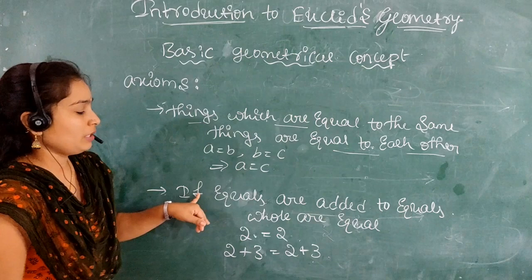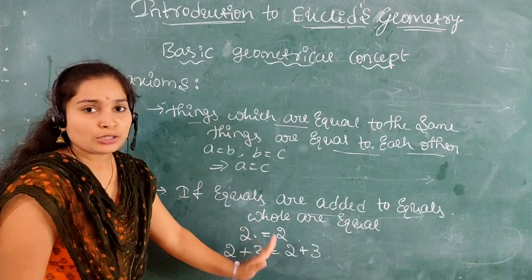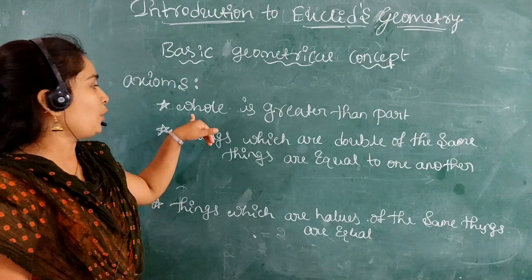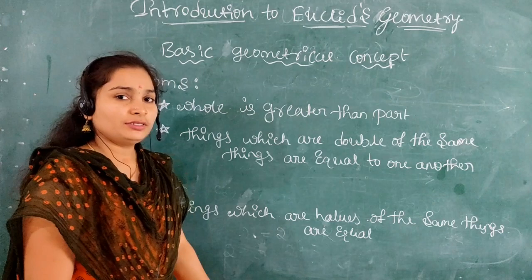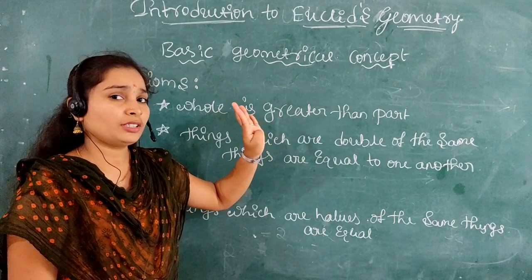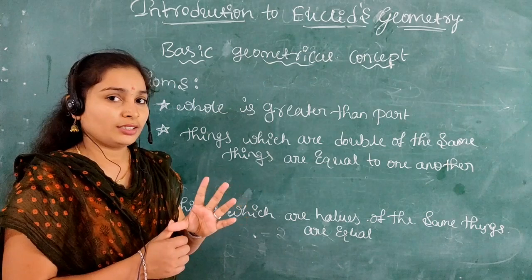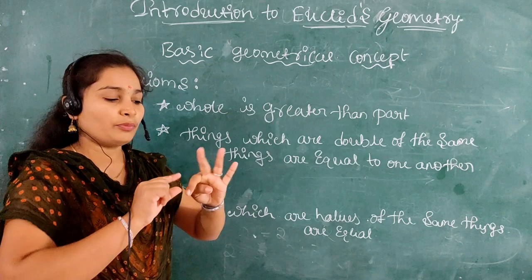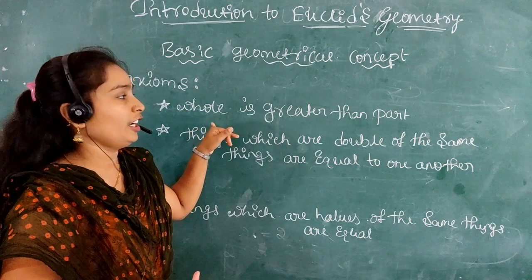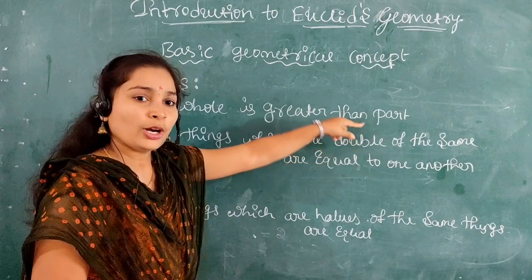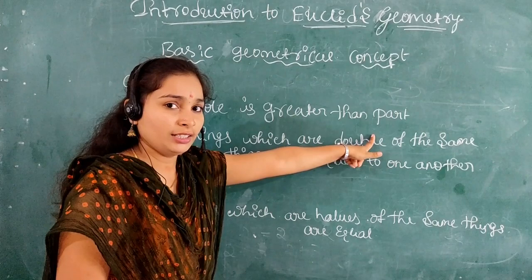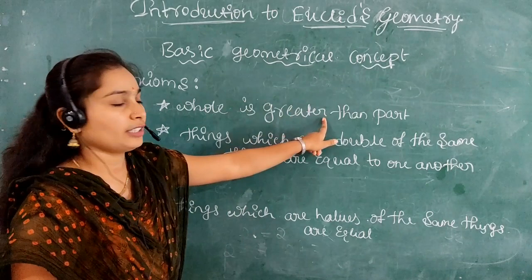If equals are added or subtracted, the result is also equal. The next axiom is: the whole is greater than the part. For example, take natural numbers, whole numbers, and integers. Integers contain the combination of both natural numbers and whole numbers, so integer is greater than natural number, and integer is greater than whole numbers. These are examples of the whole being greater than the part.